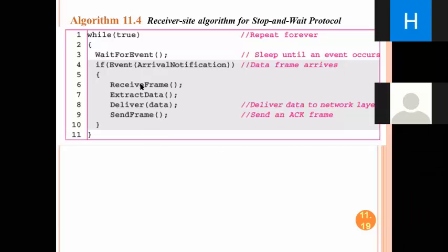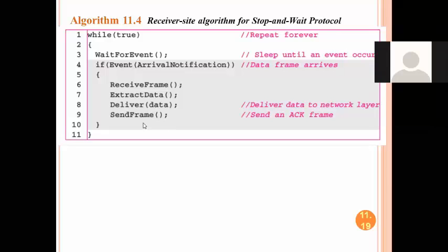On the receiving side, there is an arrival notification waiting all the time. We receive the frame, extract the data, deliver it to the network layer, and after successful transmission we send the acknowledgement frame back. In the previous lecture, the receiver did only three events: receive frame, extract data, deliver data. Now this fourth event is added — sending the positive feedback to the sender.